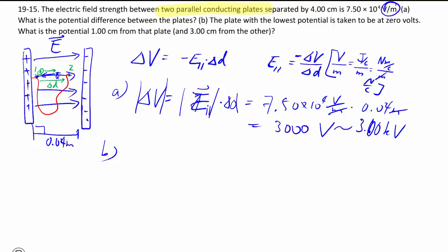Part B. Then they say to play the lowest potential. So here is V equals zero. What is the potential one centimeter away from that plate? So in this case, you imagine if you move from this zero point over to this one centimeter, you can use this thing. So delta V is equal to negative E delta D.